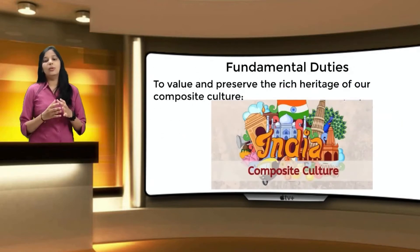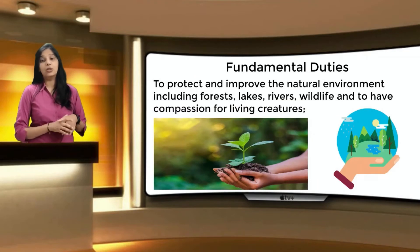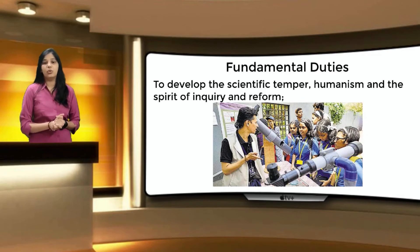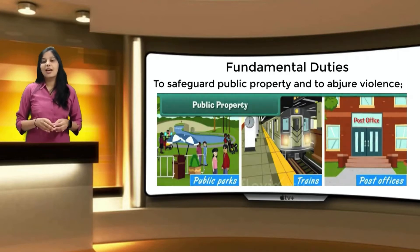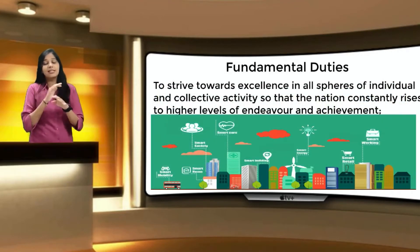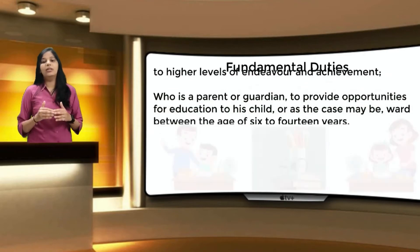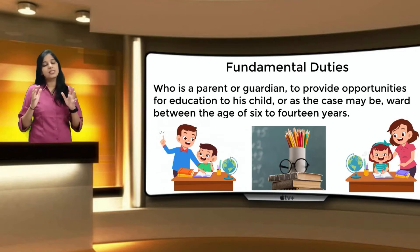Also under the fifth duty, to renounce practices derogatory to the dignity of women. The sixth is to value and preserve the rich heritage of our composite culture. The seventh is to protect and improve the natural environment including forests, lakes, rivers and wildlife, and to have compassion for living creatures. The eighth is to develop scientific temper, humanism and the spirit of inquiry and reform. The ninth is to safeguard public property and to abjure violence. The tenth is to strive towards excellence in all spheres of individual and collective activity so that the nation constantly rises to higher levels of endeavour and achievement. The eleventh duty is for every parent or guardian to provide opportunities for education to their child or ward between the ages of 6 and 14 years.